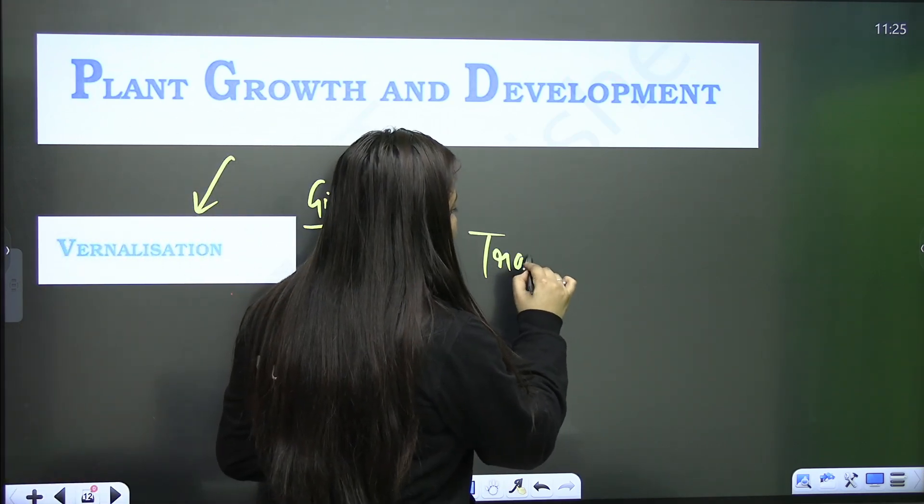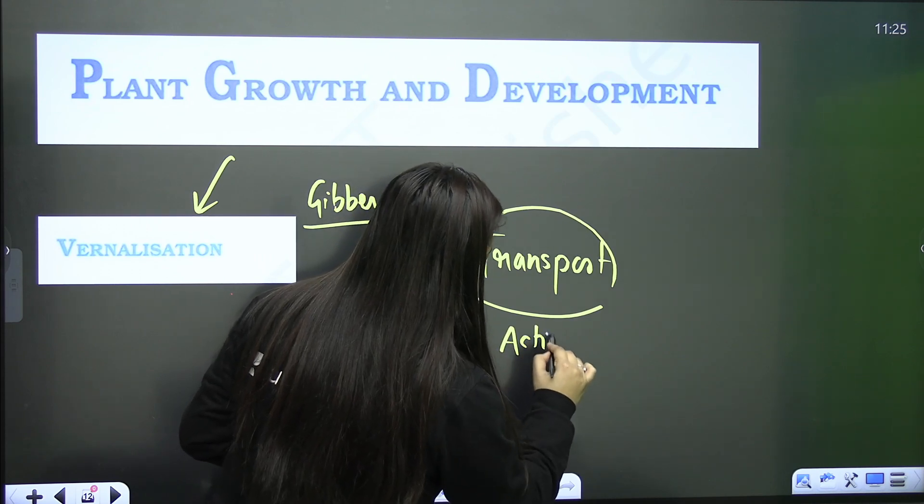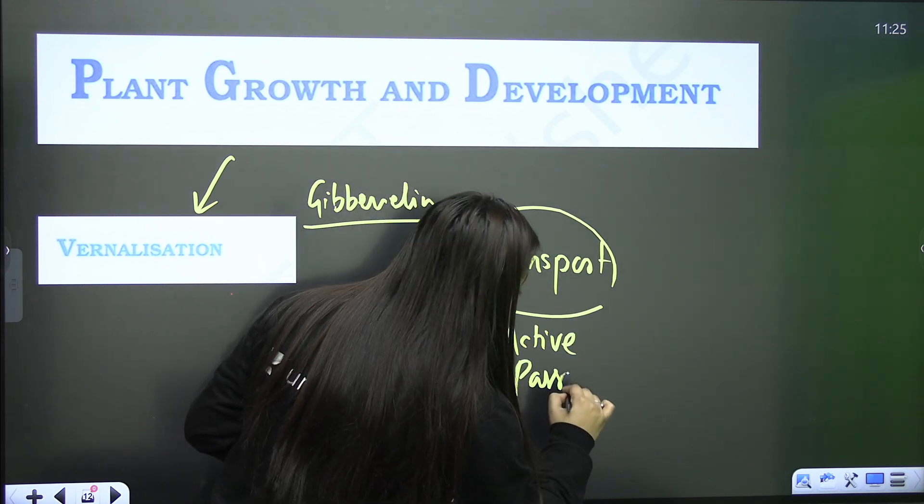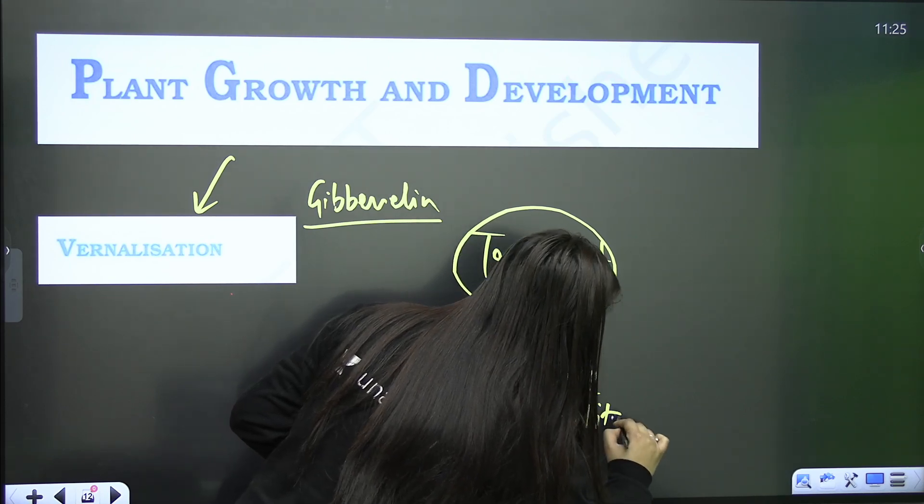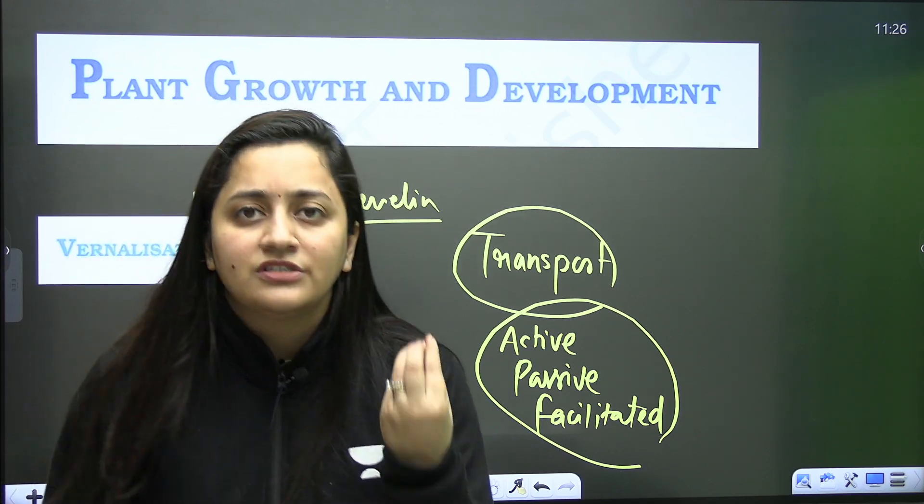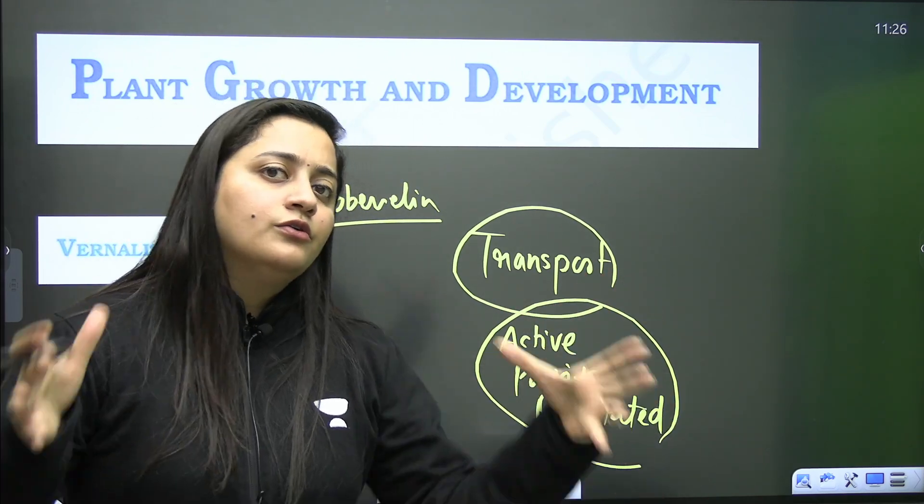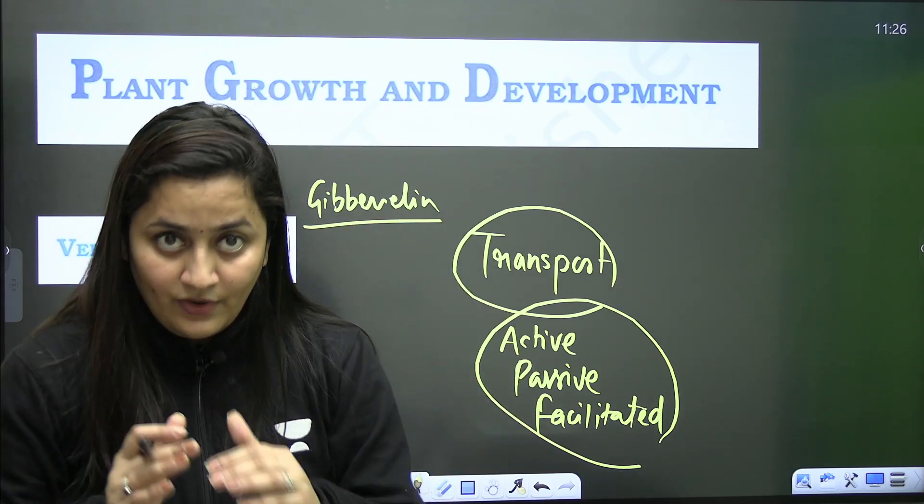Now when it comes to the transport in plants chapter, active transport, passive transport, the facilitated one—you need those definitions. You need those definitions. You should know the basic concepts of that. So this is all about this video. That is how you should complete your deleted syllabus with the syllabus that you are currently studying.